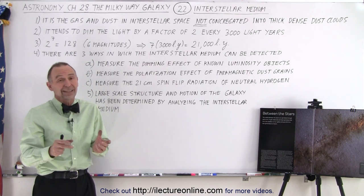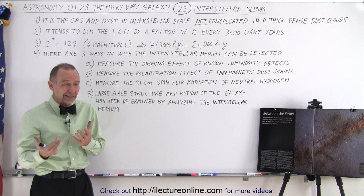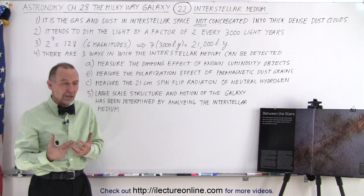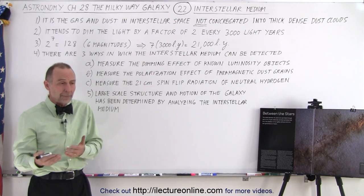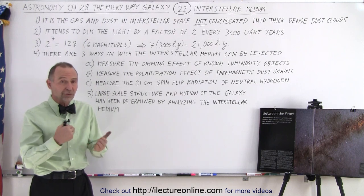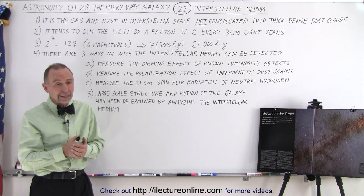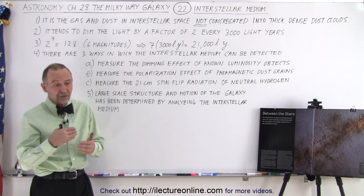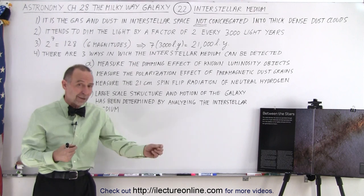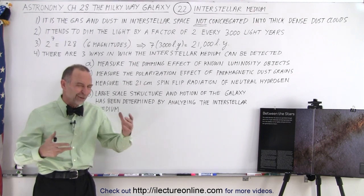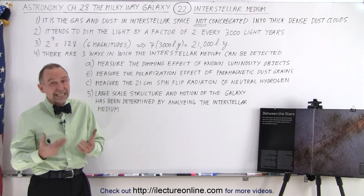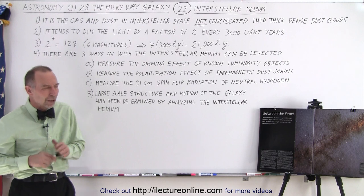That's kind of difficult to do because it's like the chicken and the egg. We don't know how bright the object is because we don't know how much interstellar material is in between, and we don't know how much interstellar material is in between because we're not quite sure how bright the object is. So it's not easy to make those types of measurements.